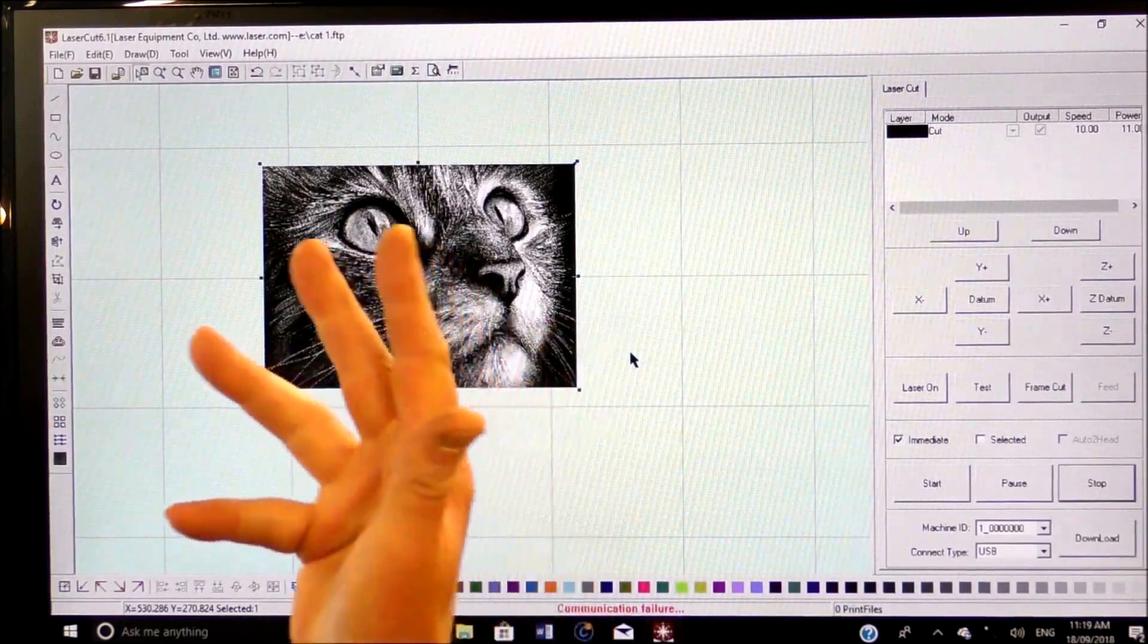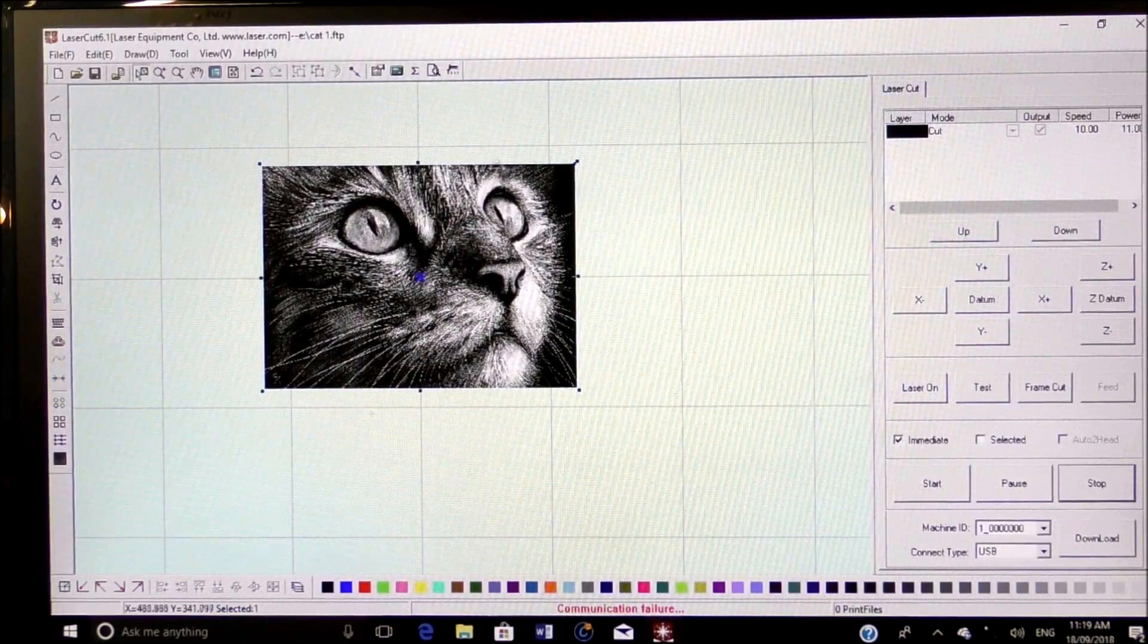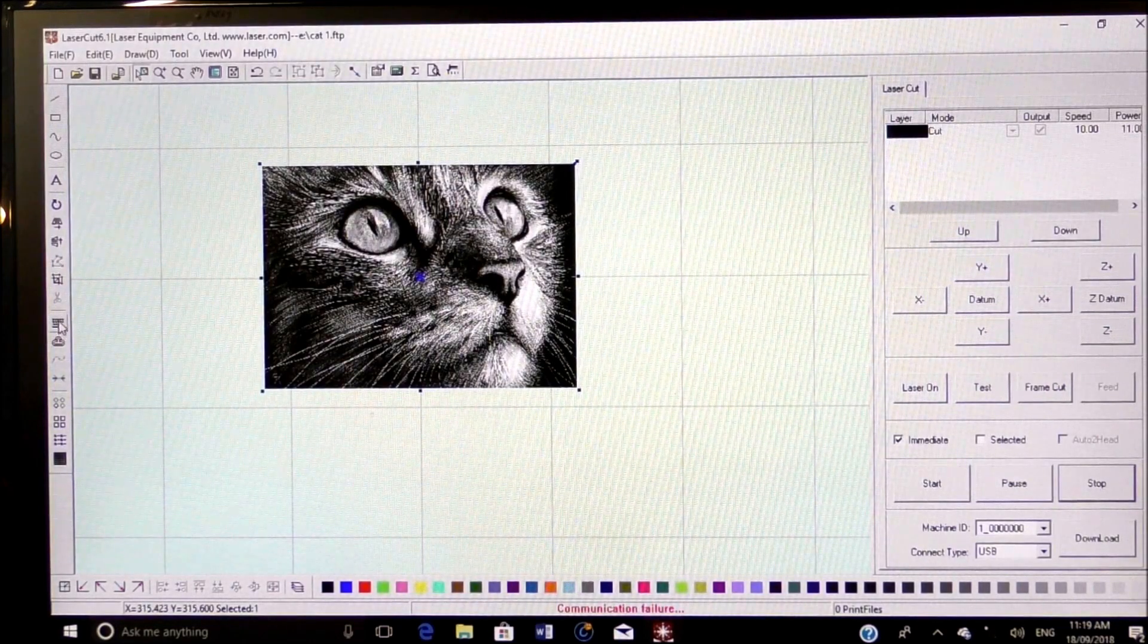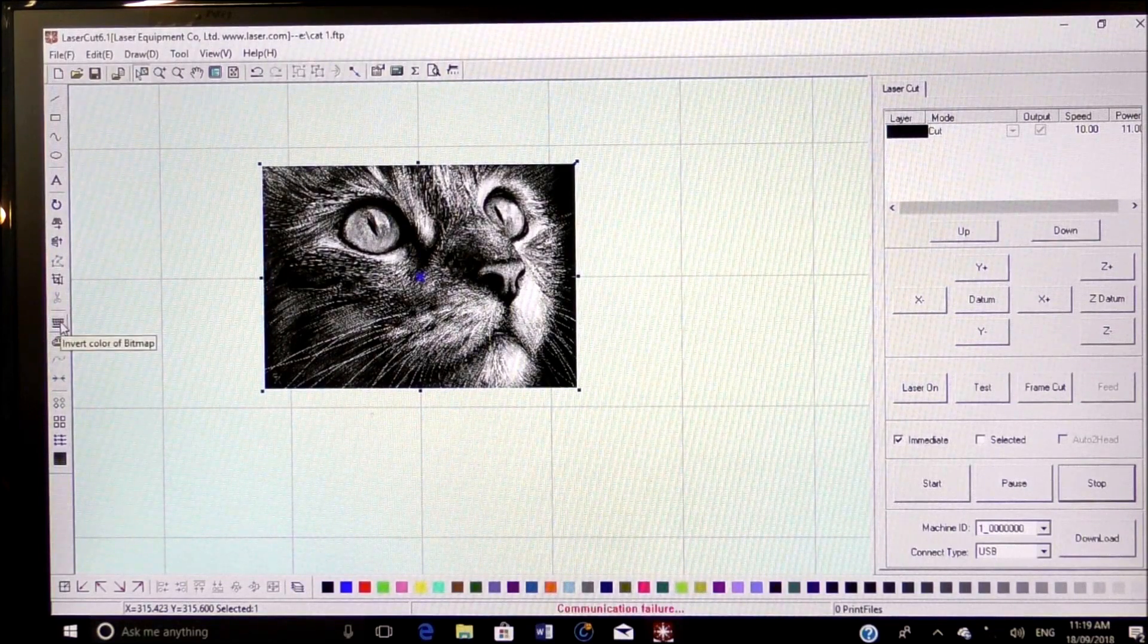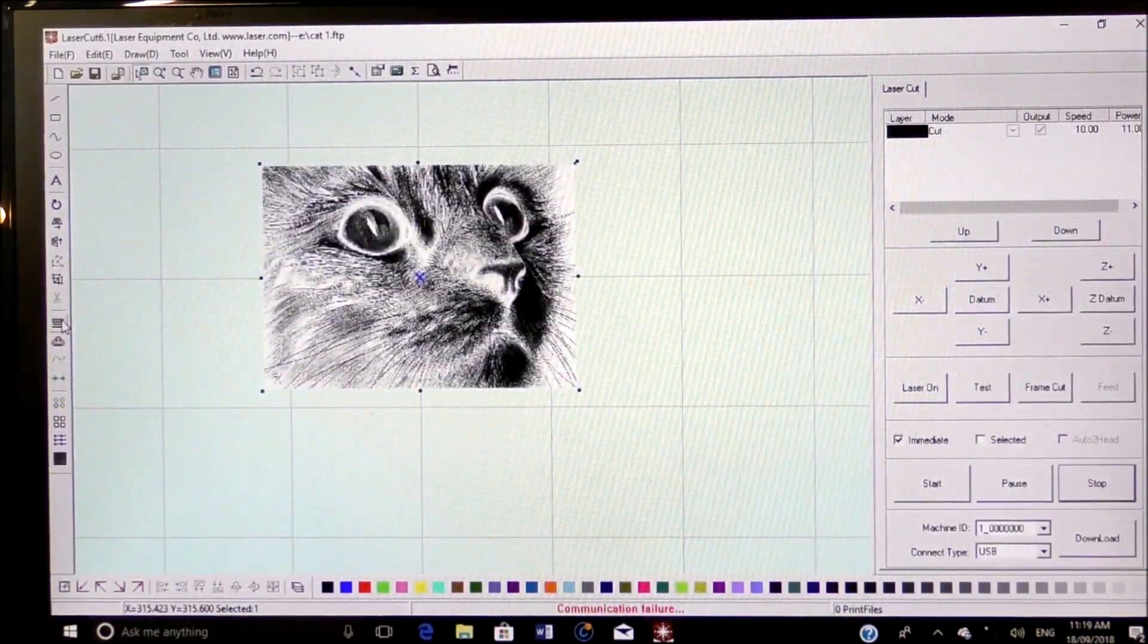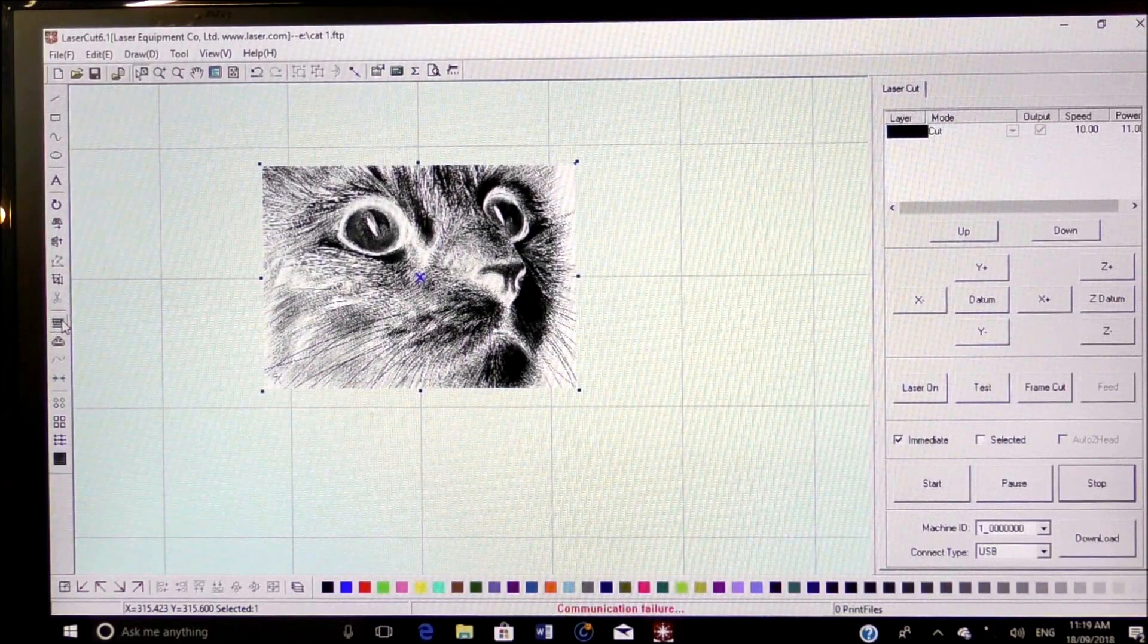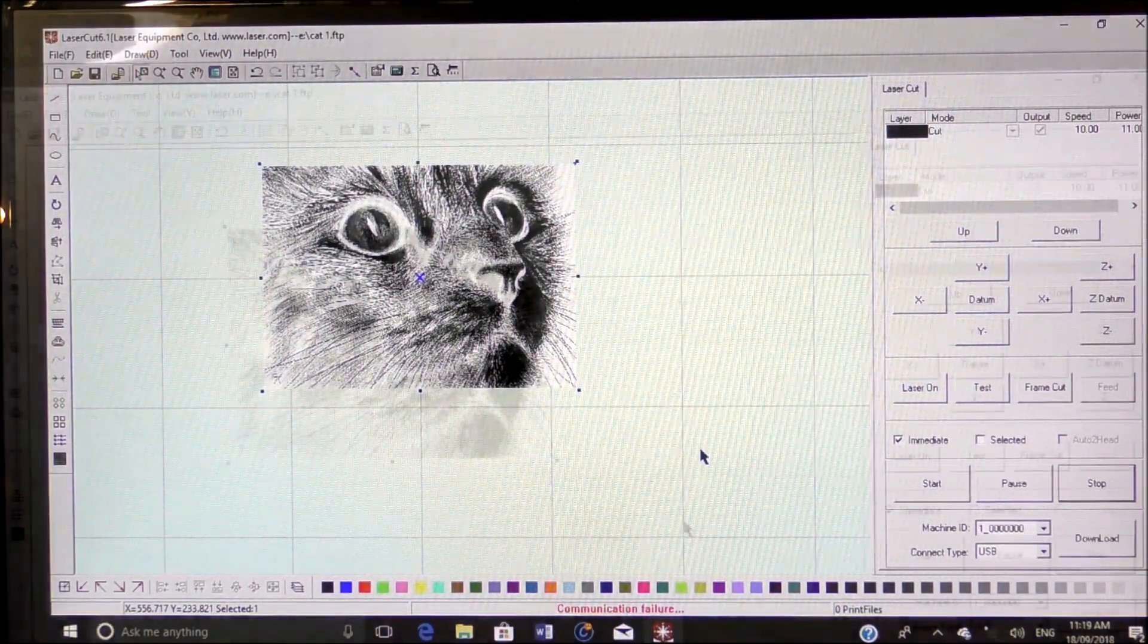So what we have to do with this picture is reverse the colors, in other words make a negative of this, which is very simply done by coming over here, invert color of bitmap, one click and it's done. That's it. So that's what the laser is actually going to have.